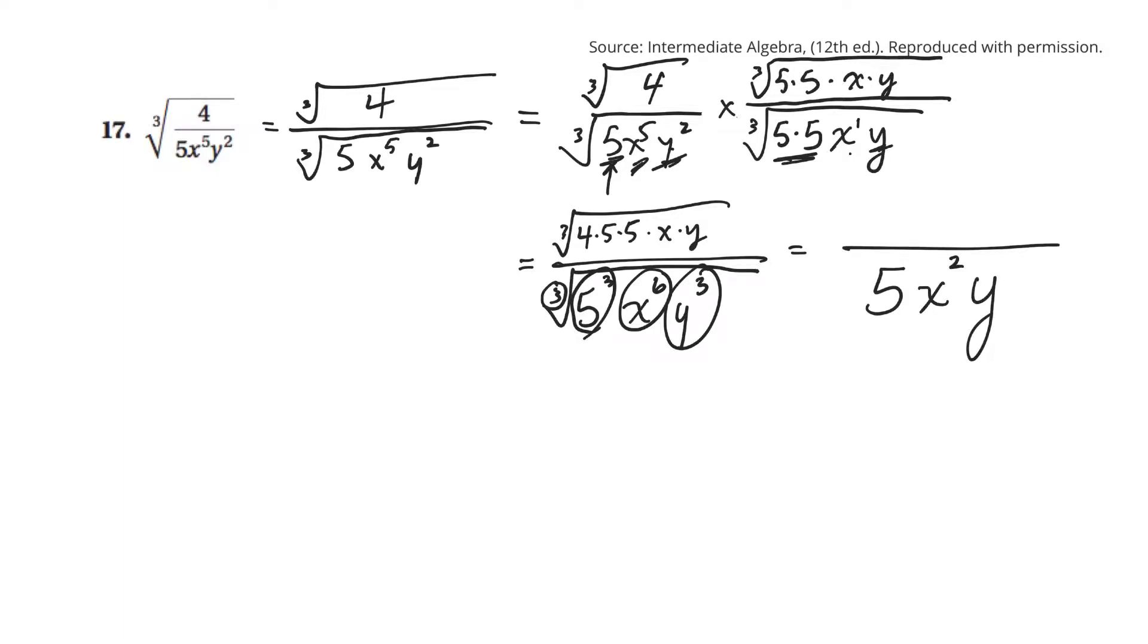And then, on the top, just figure out what 4 times 5, that's 20 times 5. That looks like to be 100. So, it'd be the cube root of 100 x y over 5 x squared y.